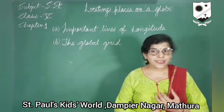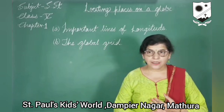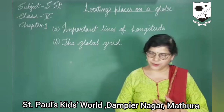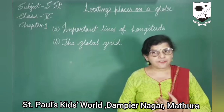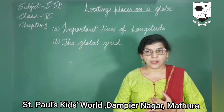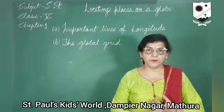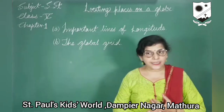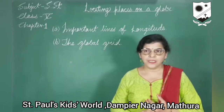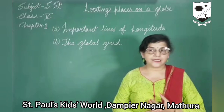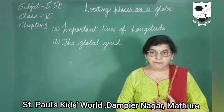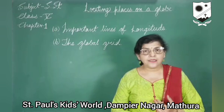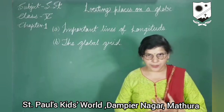The first one is the prime meridian, or the zero degree longitude. In 1884, the longitude passing through the town of Greenwich in the United Kingdom was adopted as the prime meridian. It is also known as the zero degree longitude.